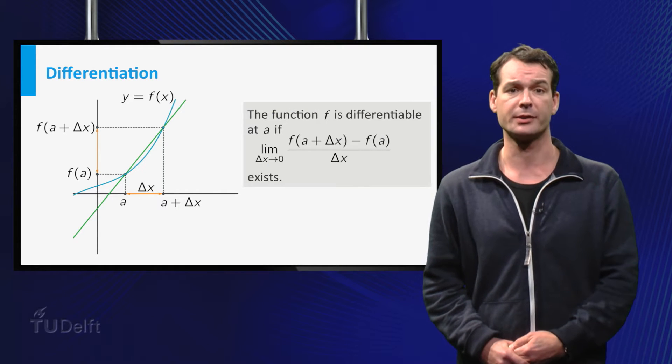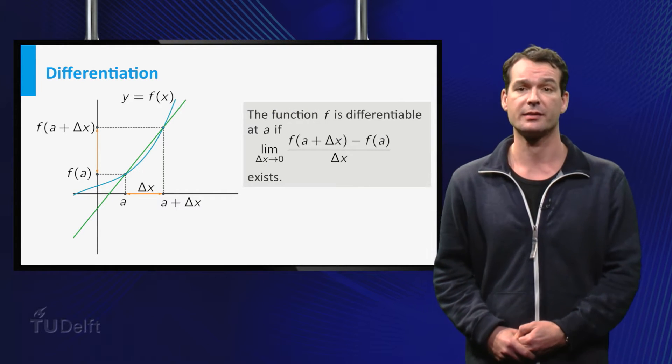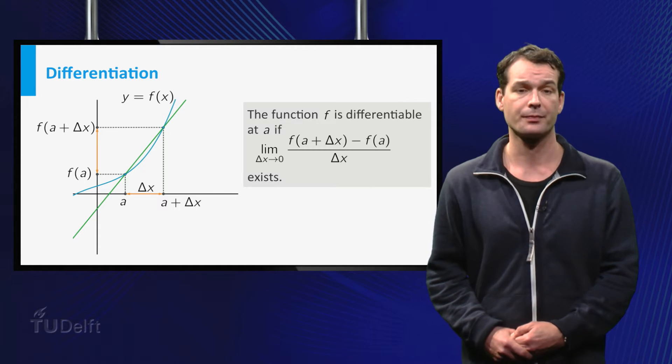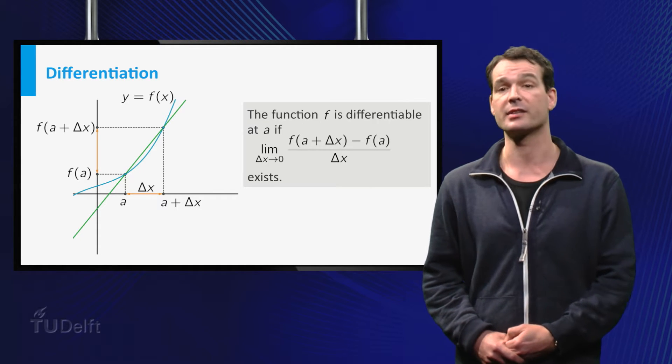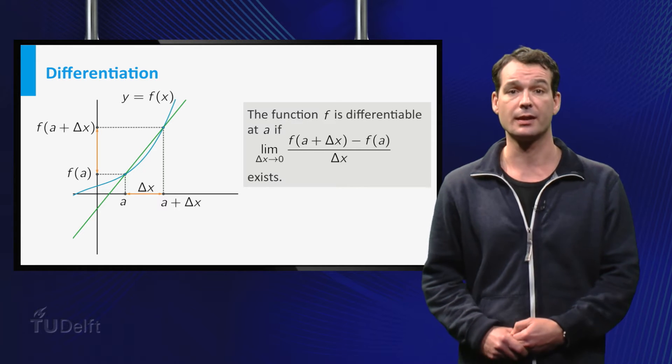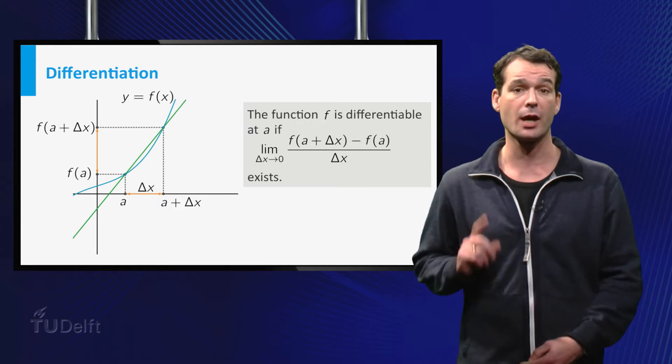Remember that the function is differentiable at the point A if the limit, as delta x goes to zero, of the following difference quotient exists: (f(a + Δx) - f(a)) divided by Δx. By exist, we mean that the limit must be exactly one real number.